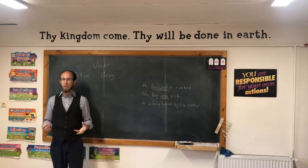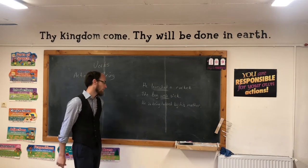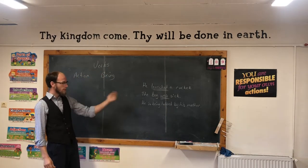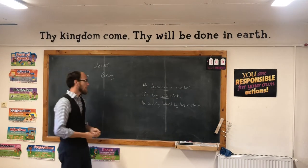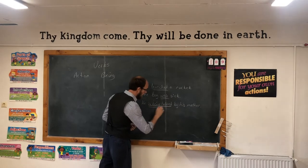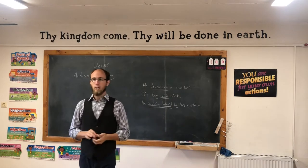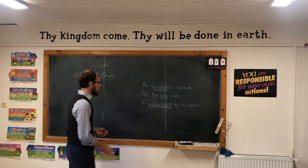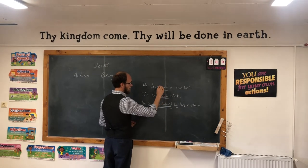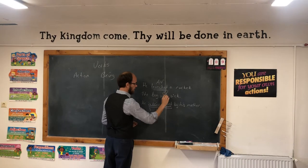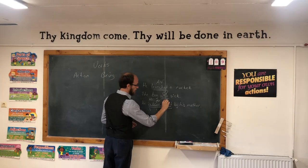Beyond the being verbs, we have helping verbs. Helping verbs come along to help the main verb. What is the complete verb in this sentence: 'He is being helped by his mother'? Is being helped — the whole thing. That's called a verb phrase: more than one word making up a verb. 'Is' and 'being' are helping verbs, and 'helped' is the main verb — an action verb.